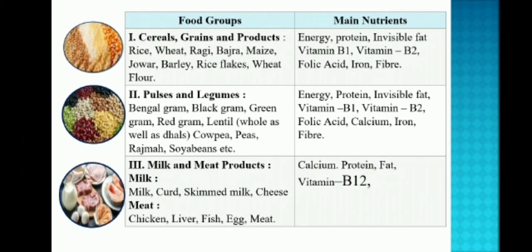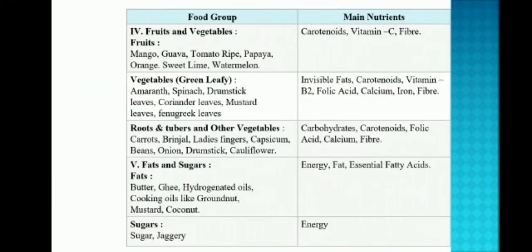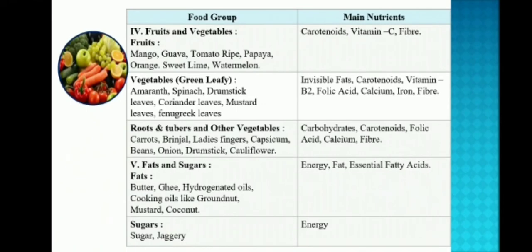Moving on to the fourth group, fruits and vegetables. Fruits and vegetables are subdivided into fruits and vegetables. Coming to the fruits: mango, guava, tomato, ripe papaya, orange, sweet lime, watermelon. The nutrients contained are carotenoids, vitamin C, and fiber.